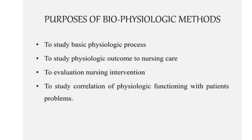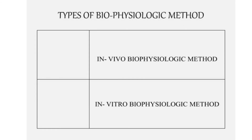Next is to study the correlation of physiological functioning with the patient's problem. Suppose the patient is suffering from liver disease — liver enzymes like SGOT and SGPT will be increased. Or if the patient is complaining of severe headache, an X-ray, CT scan, or MRI scan can reveal brain abnormalities like a brain tumor, a clot, or any space-occupying lesions in the brain.